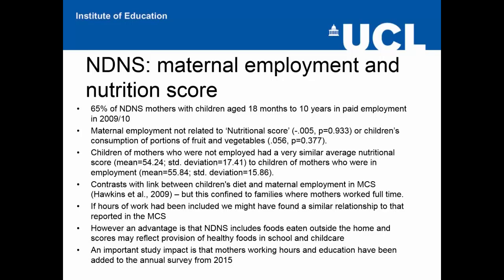We found that 65% of mothers with children in our age group were in paid employment in 2009–10, and that maternal employment was not related to the nutritional score or to children's consumption of portions of fruit and vegetables. Children of mothers who were not employed had very similar average nutritional scores to those who were. Our findings contrast with those of the Millennium Cohort Study, though that analysis was confined to families where mothers worked full-time. Hours of work for mothers were not collected in the NDNS at the time — though our finding of no relationship could also simply be true. One advantage of the NDNS is that its very detailed diet data includes foods eaten outside the home, so scores better reflect children's overall diets including healthy foods provided in schools and childcare. An important impact of our study is that mothers' working hours and education are now included in the annual survey from 2015.